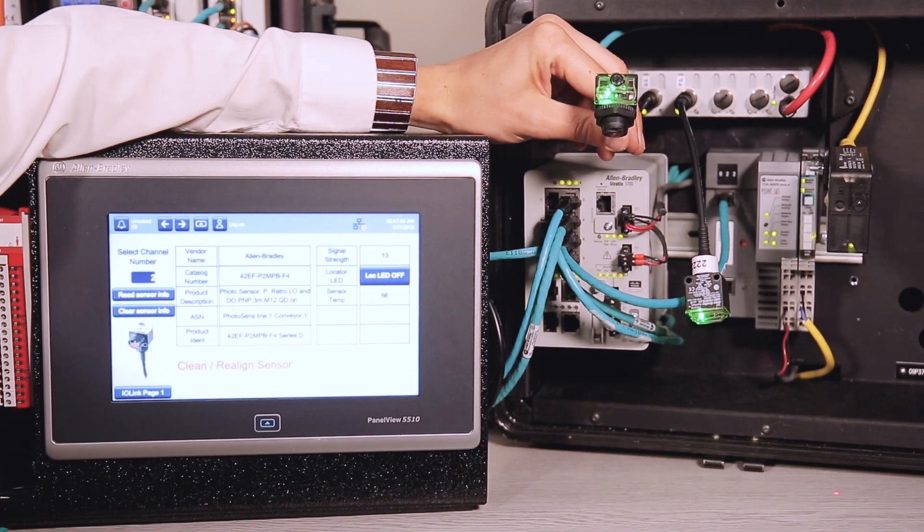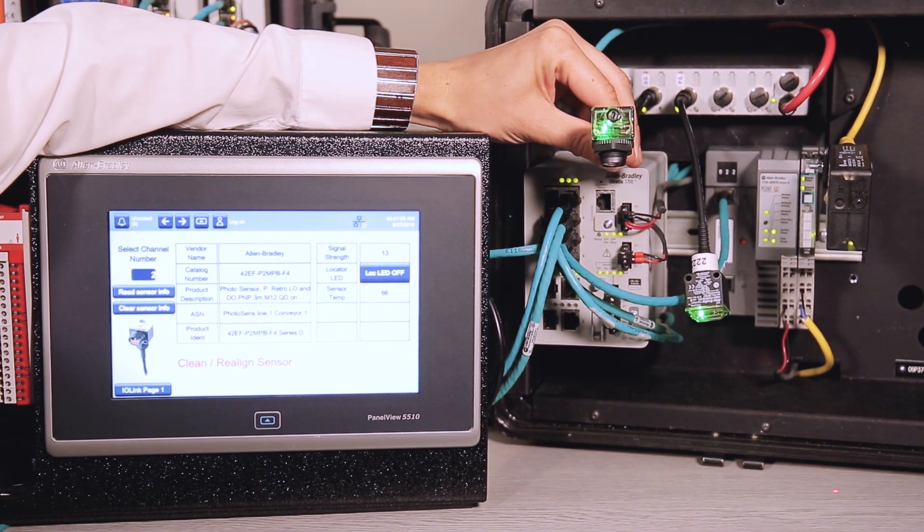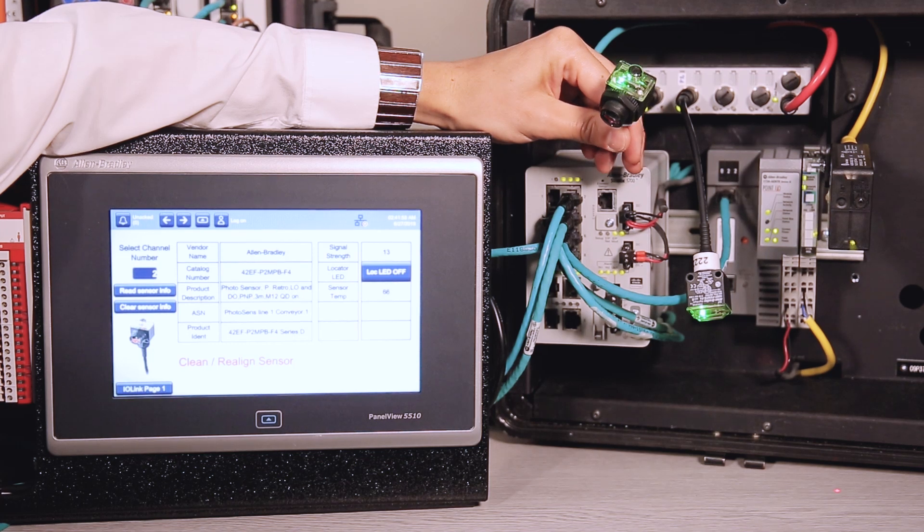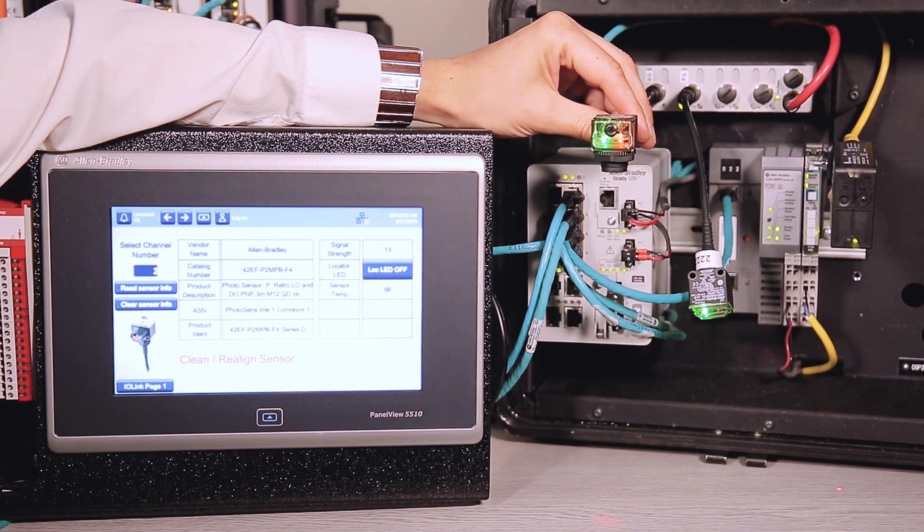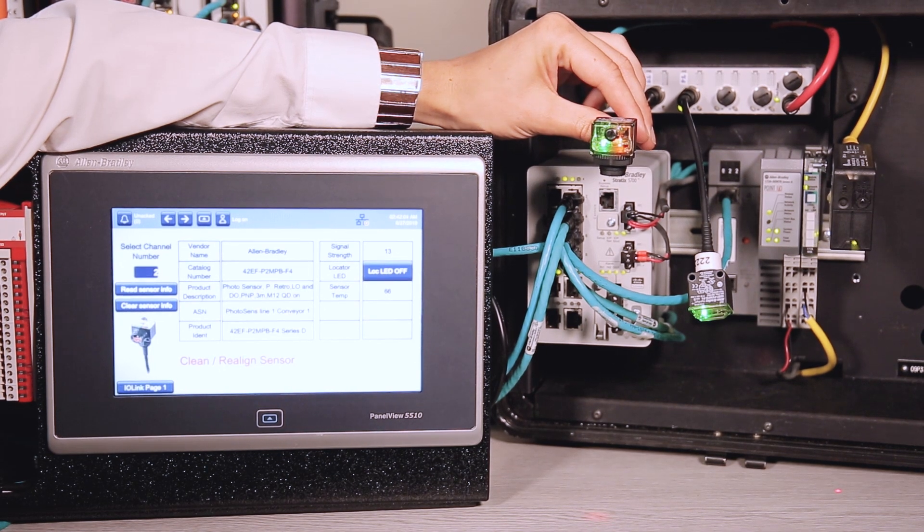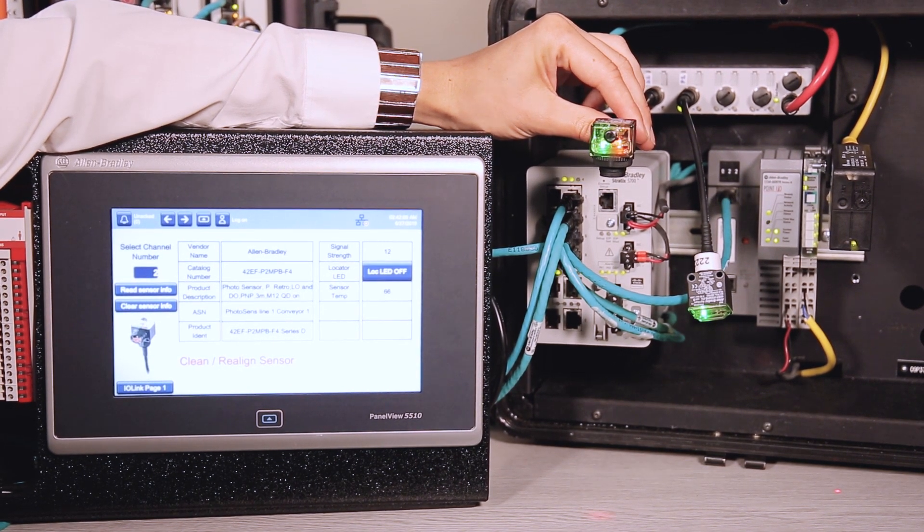One really useful function of the IO-Link is if you do damage a sensor, if you go and get a replacement sensor out of the stores, you can fit that into the IO-Link and it will reteach it to meet the exact settings required for your production run.